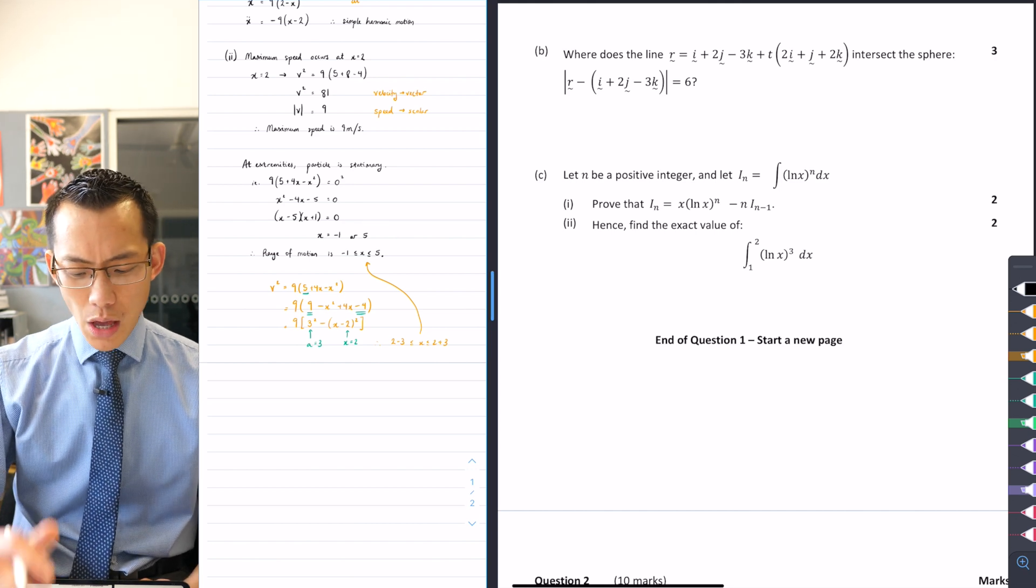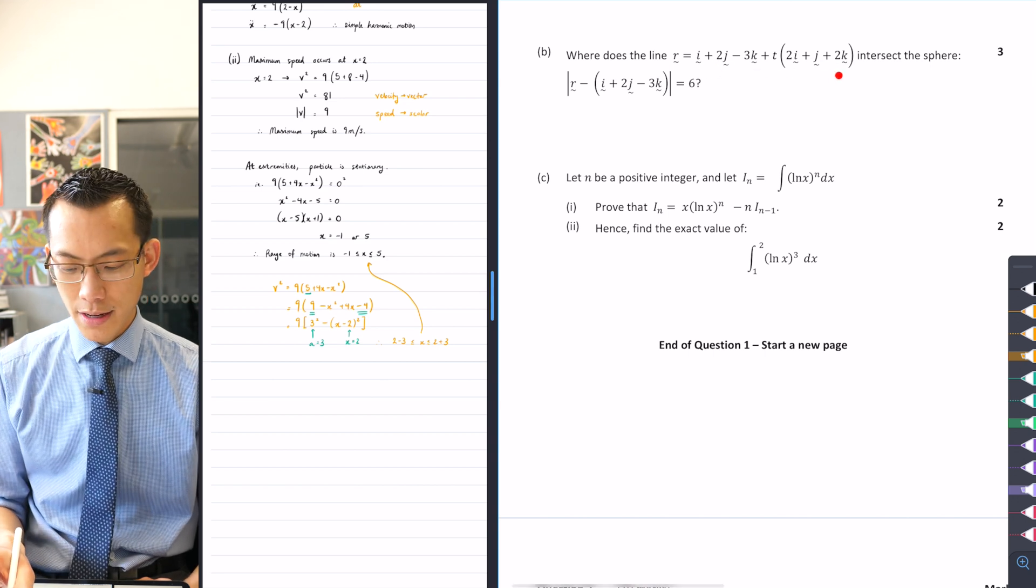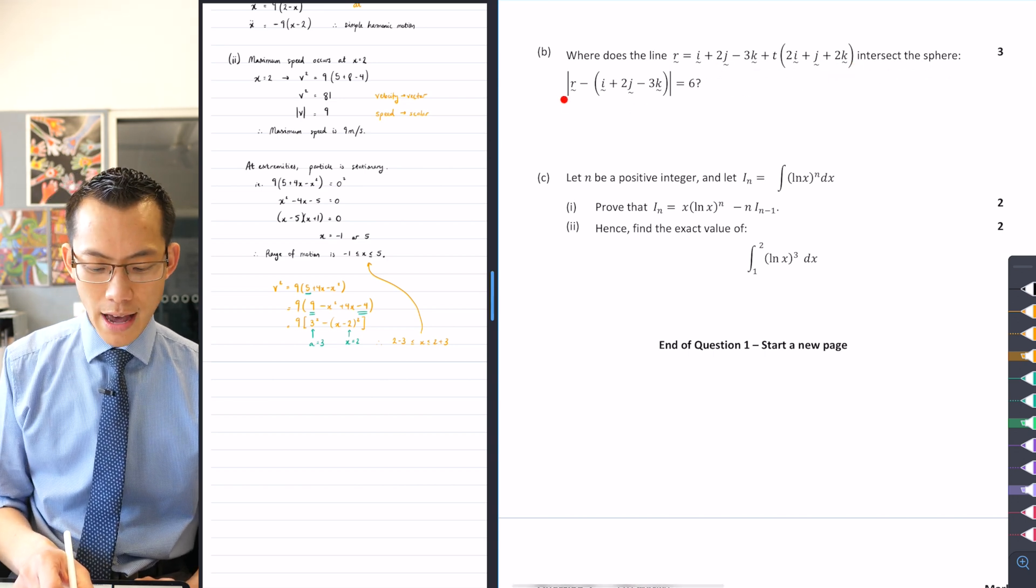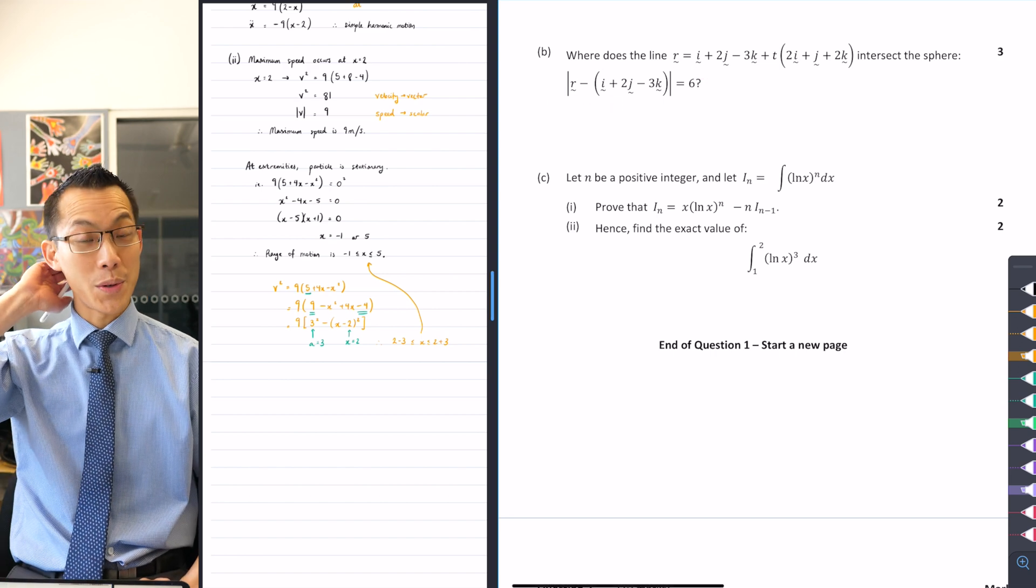It says, where does the line r, and then they provide you all of this particular part, intersect the sphere, and then they give you this equation of a sphere down here. Okay, so what do we do with this thing?